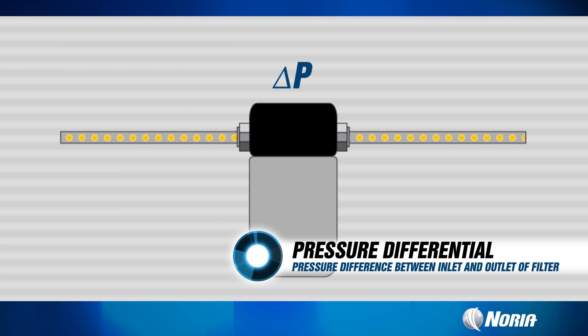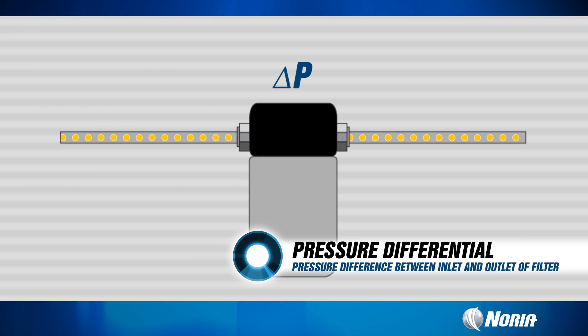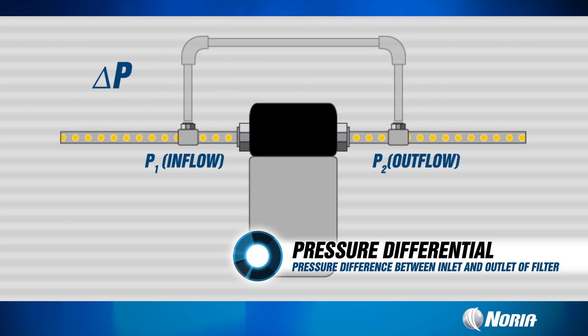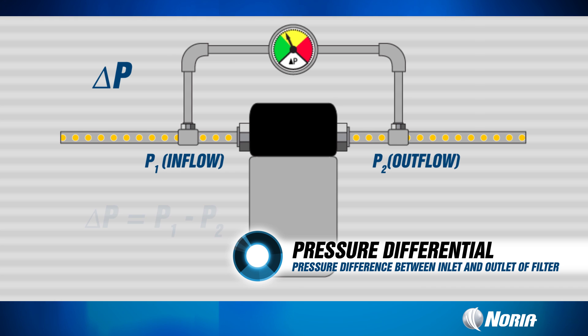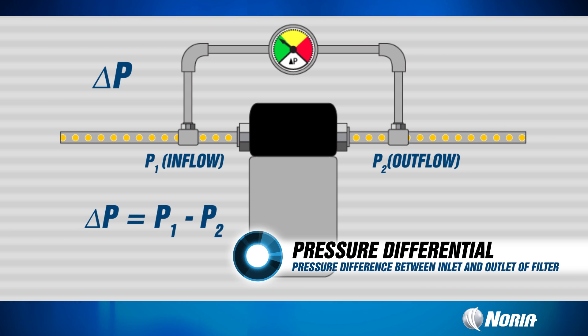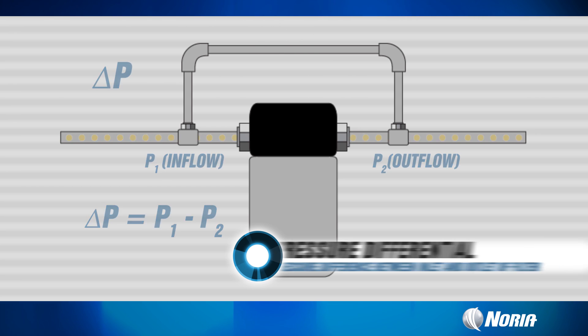All three of those terms mean the exact same thing. We're going to take a pressure reading on the inlet side of the filter, take one on the outlet side of the filter, and then see what the difference is. That is basically our pressure drop, differential pressure, or delta P. Different people use different terminology, but they all mean the same thing. The last thing I need you to understand is the difference in the filter types.